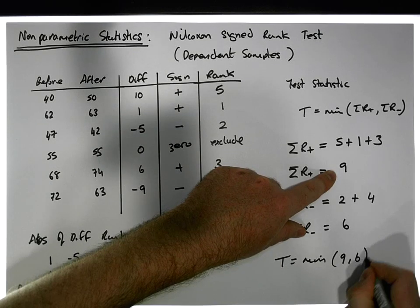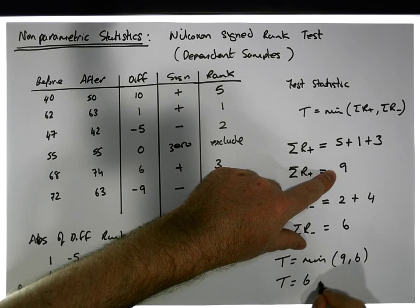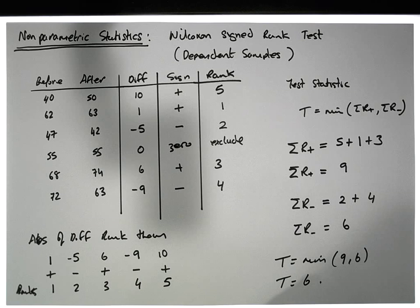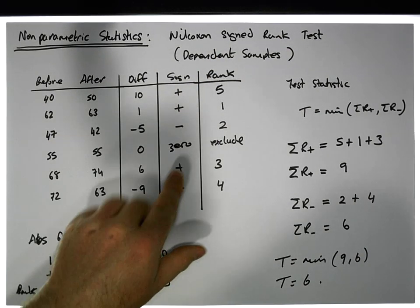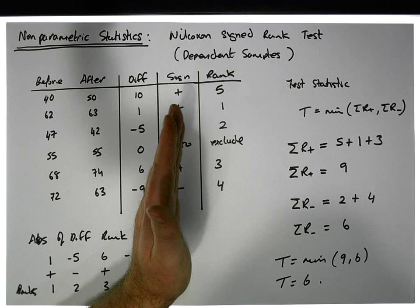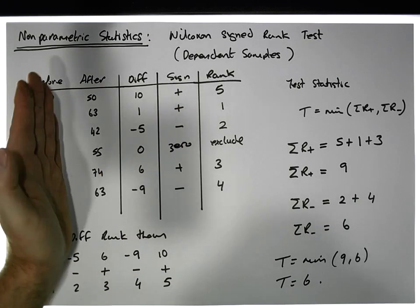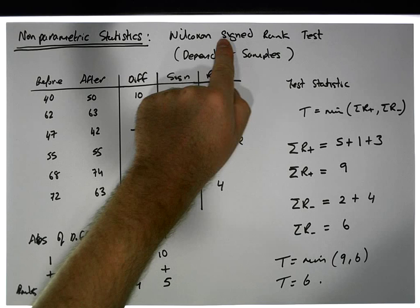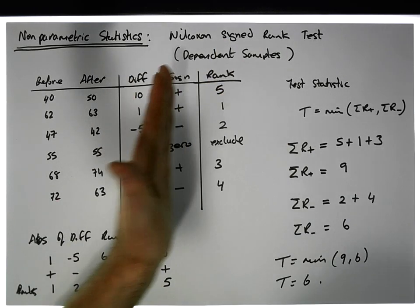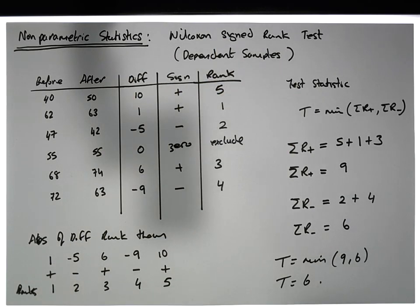From the signed rank test, the signs are important to tell us whether you've gained or haven't gained with respect to the intervention. The signed rank test considers the magnitude of the difference, which is six here. This is our test statistic, and we need to compare this test statistic to critical values for a sample of this particular size.